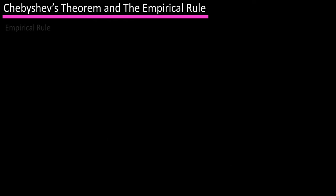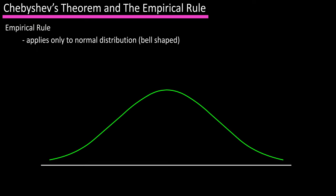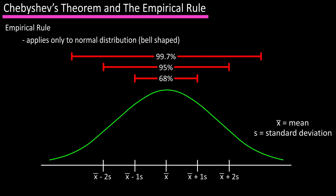Now for the empirical rule, which applies only to a distribution that is bell-shaped or normal. It states that approximately 68 percent of the data values will lie within one standard deviation of the mean, approximately 95 percent will lie within two standard deviations of the mean, and approximately 99.7 percent of the data values will lie within three standard deviations of the mean.